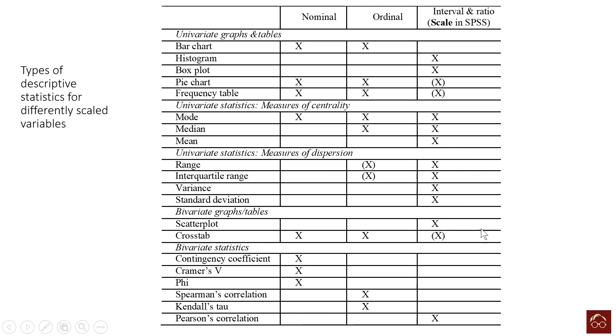For bivariate graphs and tables, we can do crosstabs for nominal and ordinal, but scatter plot applies to interval and ratio. We can do crosstab for interval and ratio but it will not be meaningful.